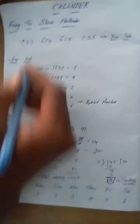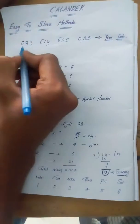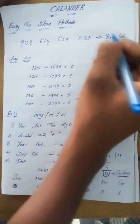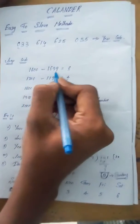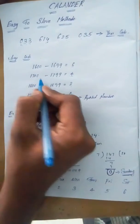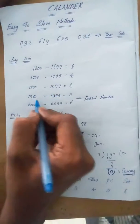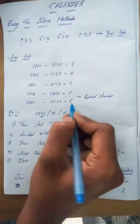Hi friends, today I'll explain an easy to solve calendar method. First, the year codes: 1600-1699 is 6, 1700-1799 is 4, 1800-1899 is 2, 1900-1999 is 0, and 2000-2099 is 6.